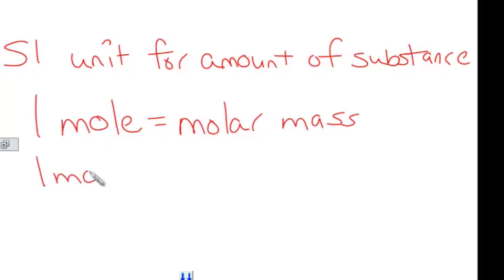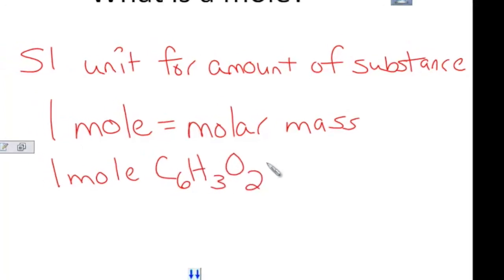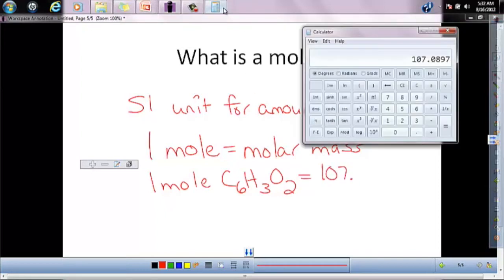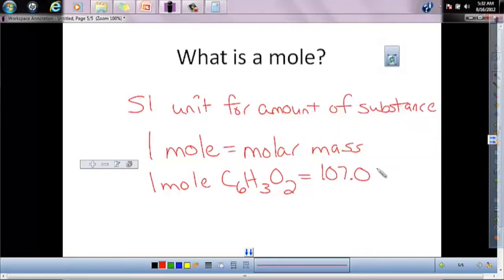So if we wanted to know how much one mole of C6H3O2 weighed, what's the molar mass of one mole, it would be equal to what we just calculated, so the 107.0897. So one mole of any substance is equal to the molar mass of that substance.